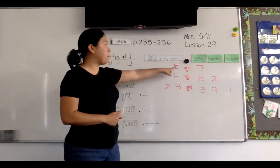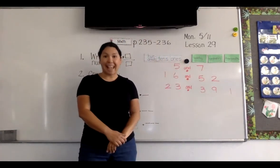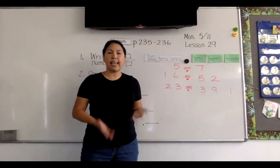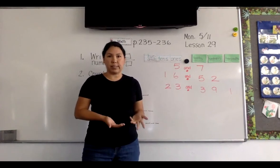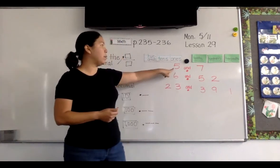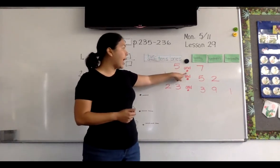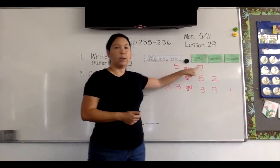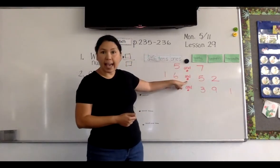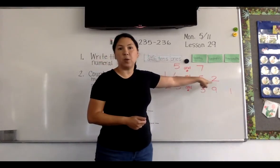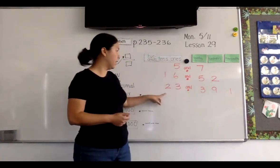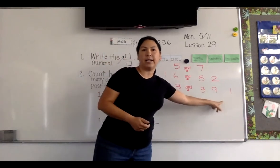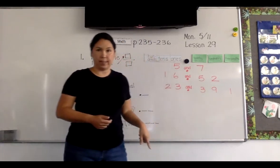Now remember, the decimal point means "and." So we only want to say "and" when we see a decimal point. On this one it would be five and seven tenths, 16 and 52 hundredths, 23 and 391 thousandths.